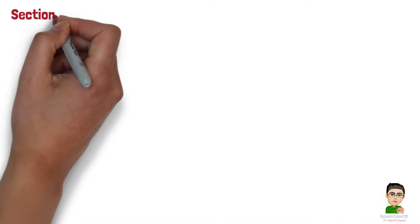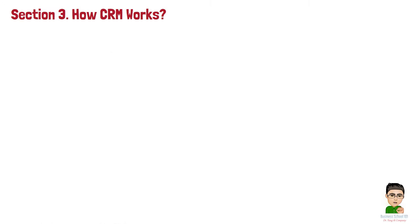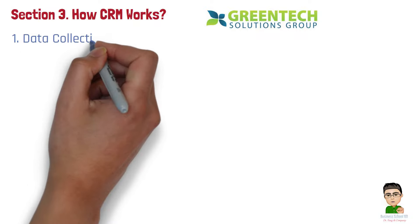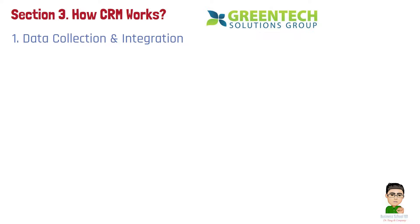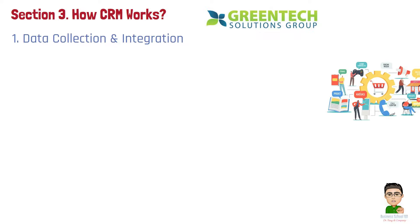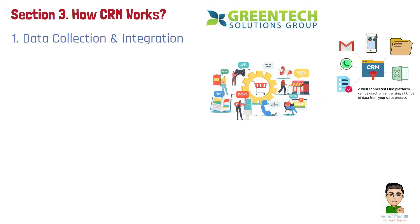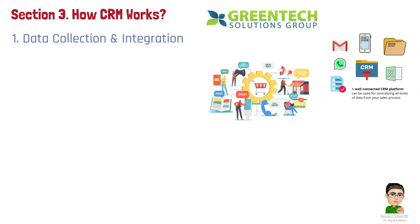Section 3: How CRM Works. Let's look at Greentech Solutions, a renewable energy company selling solar panels and energy-saving products, and how a CRM system helps them. Number 1: Data Collection and Integration. Greentech Solutions gathers customer data from various channels like its website, social media, emails, and consultations. The CRM centralizes this information into one platform, creating a unified customer profile. This allows the sales, marketing, and customer service teams to access the most up-to-date customer information, ensuring a more personalized approach.